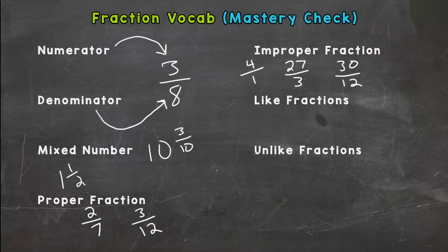There you go. Like fractions means the denominators are the same. So one-sixth and four-sixths would be like fractions because the denominators are the same. Or one-twelfth and seven-twelfths. Those would be like fractions.